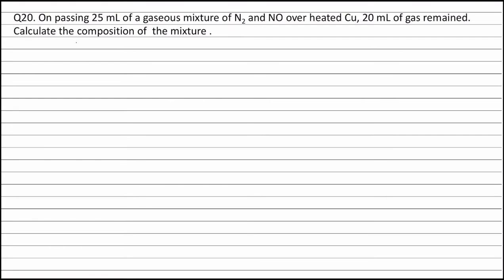The total volume of the mixture of nitrogen and nitric oxide is equal to 25 ml. Let the volume of nitric oxide be x ml. Therefore, the volume of nitrogen is equal to 25 - x ml.